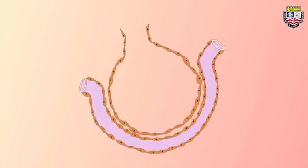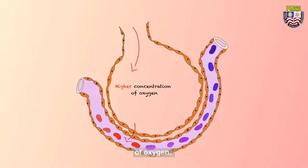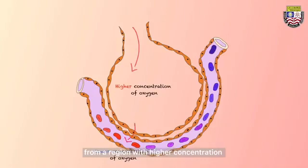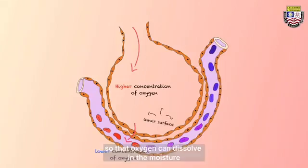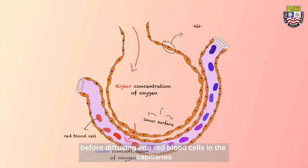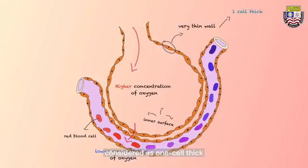Let's understand the concept one by one. The air reaching the alveoli has a higher concentration of oxygen. The oxygen will then diffuse from a region of higher concentration to a region of lower oxygen concentration. The inner surface of the alveolus is very moist so that oxygen can dissolve in the moisture before diffusing into red blood cells in the capillaries through the alveolus wall. Each alveolus has a very thin wall, considered as one cell thick, to make the diffusion process easier.